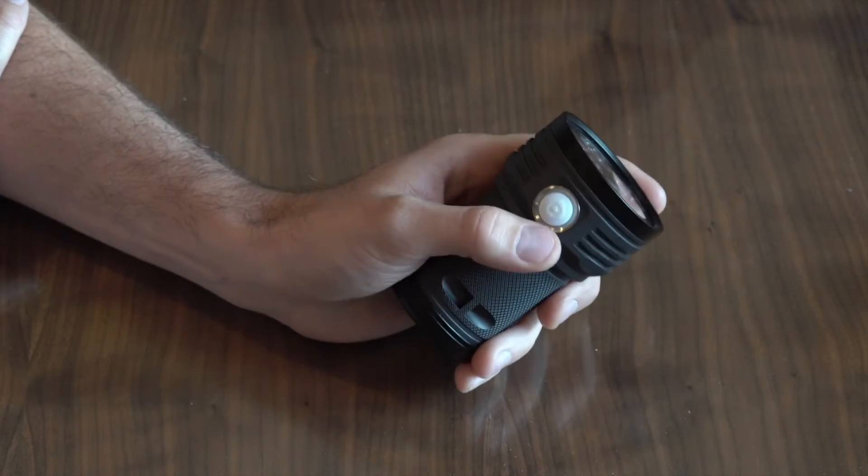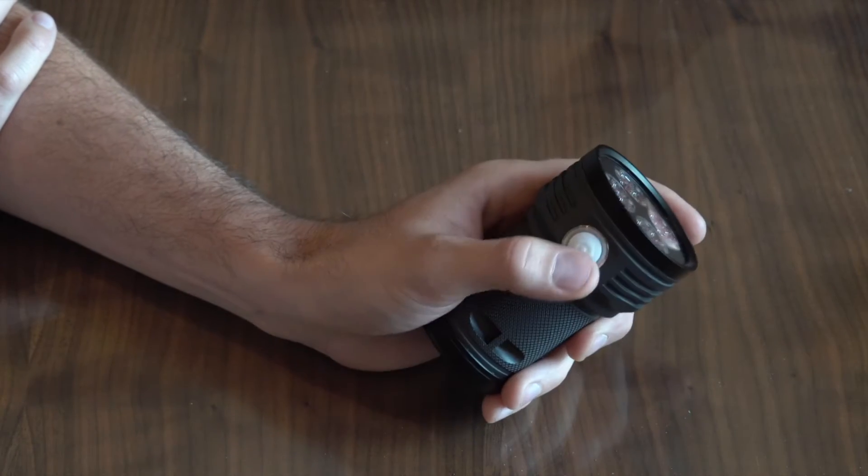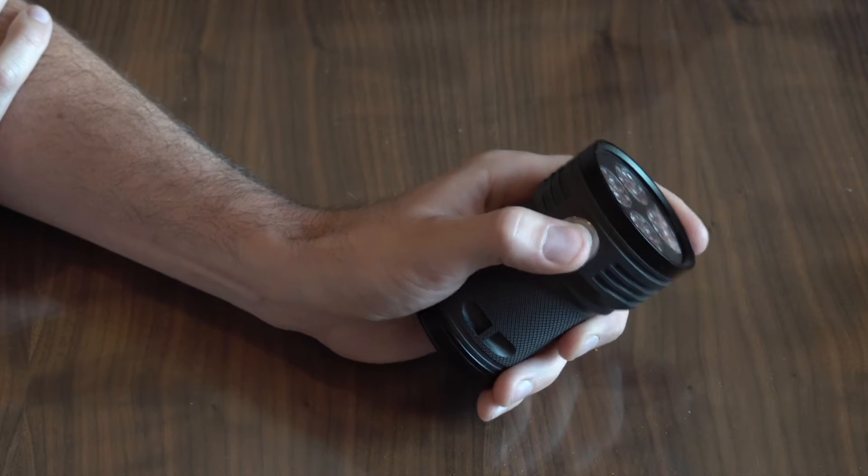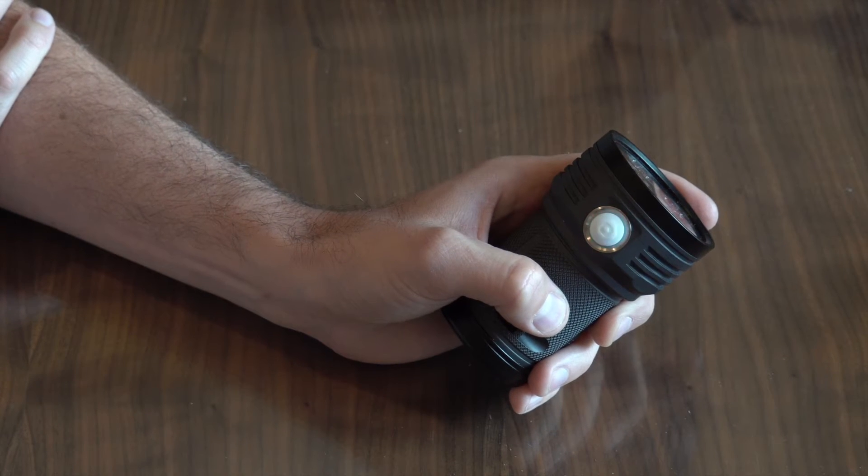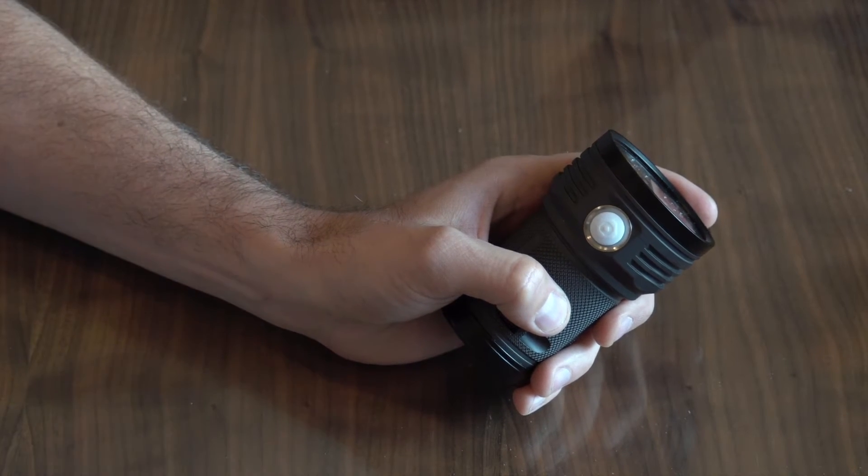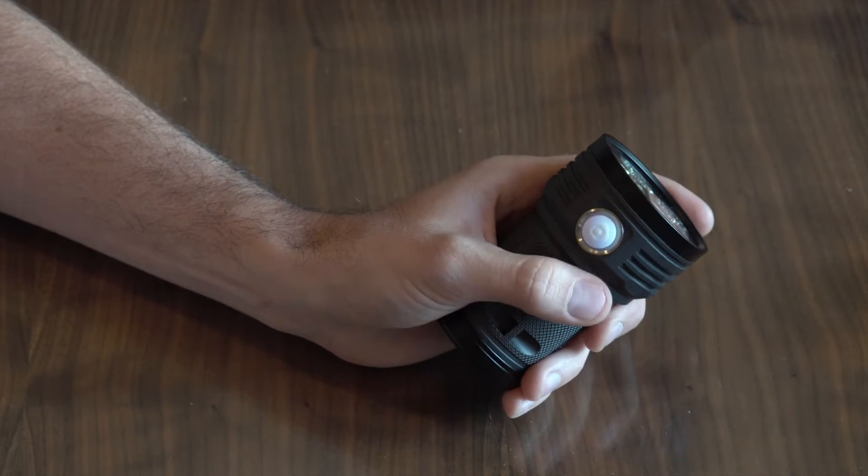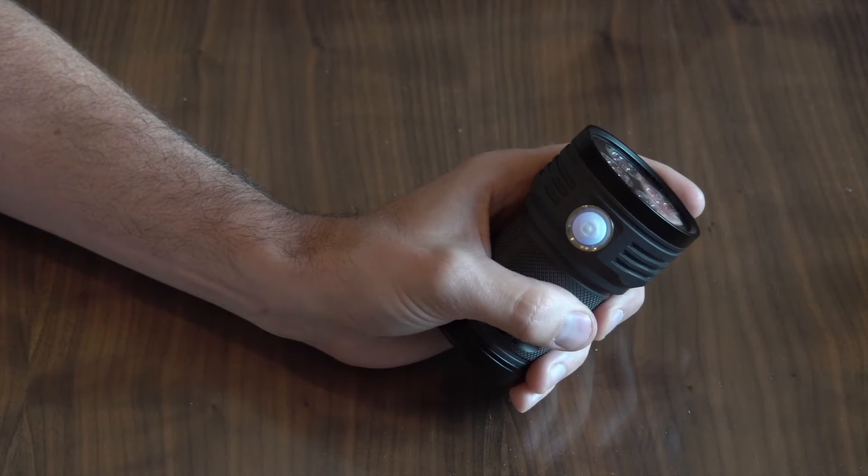But all you have to do to unlock it now is to click it six more times. One two three four five six. The light blinked twice, the button turned green, and the light is now re-enabled.